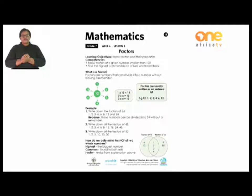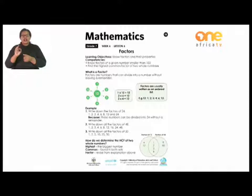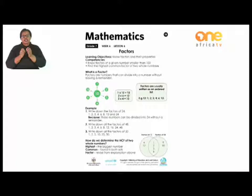Let's look at an example. If we take 12 and we need to find the factors of 12: 1 divides into 12, so 1 is a factor of 12 as well as 12 itself. 2 can divide into 12, so both 2 and 6 are factors of 12. 3 divides into 12 four times, so 3 and 4 are also factors.